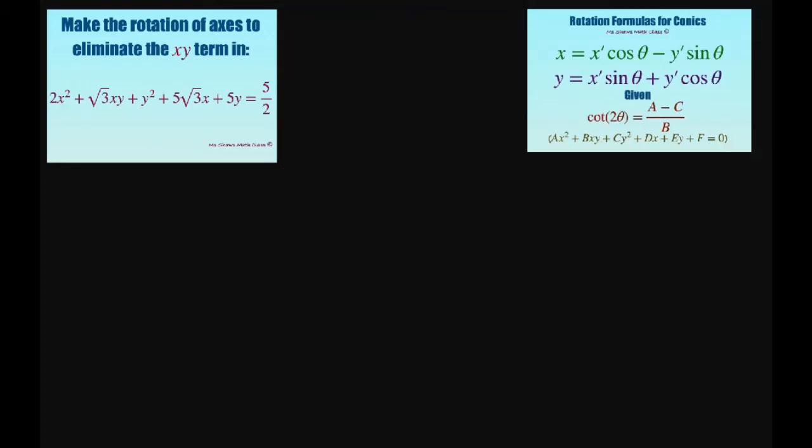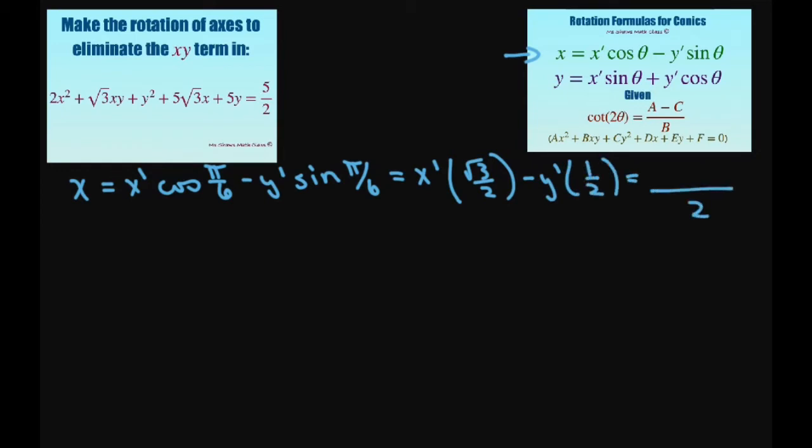So basically this is the more tedious part, and you just fill everything in. Let's do x first. So x is going to equal x prime times cosine of pi divided by 6 minus y prime times sine of pi divided by 6. This gives us square root of 3 x prime minus y prime, all divided by 2.